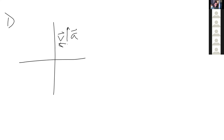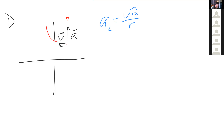A few things to know about circular motion: we have an equation for the acceleration that allows a particle to travel in a circle — that's called centripetal acceleration, and the equation is that the centripetal acceleration equals v-squared over r, where v is the speed or magnitude of the velocity and r is the radius of the circle. The centripetal acceleration will always point toward the center of the circle that the particle is traveling along. In this problem my job is to find the location of that center point.